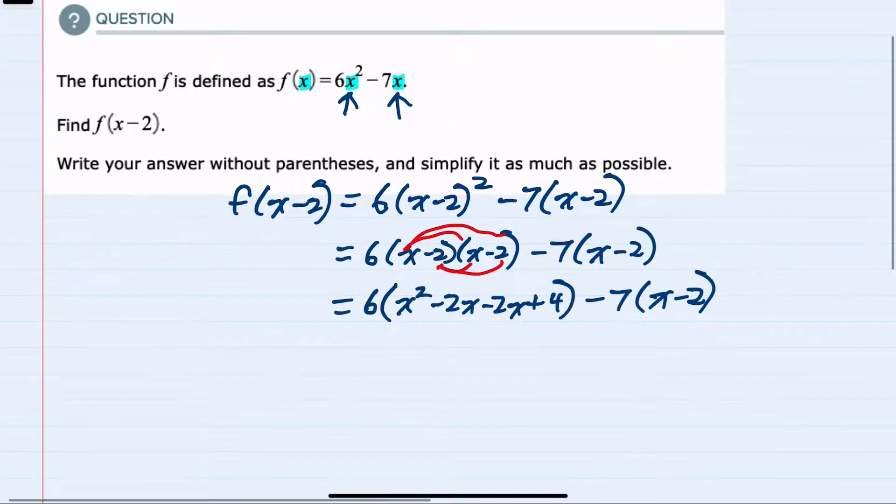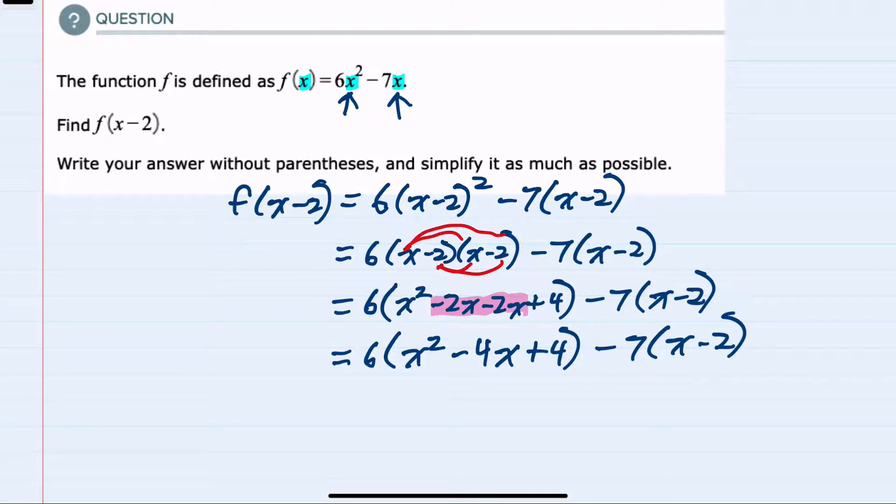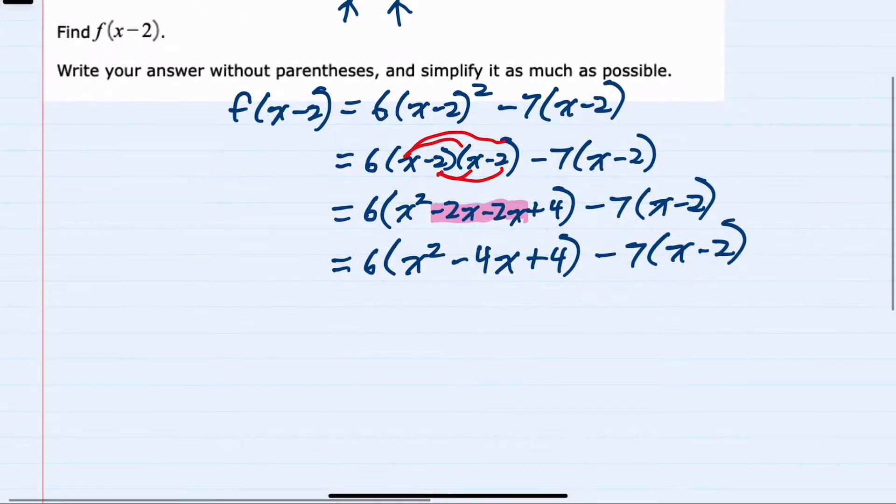Before multiplying we can see that we have like terms inside this parentheses. So I'll go ahead and combine those. Minus 2x minus 2x is a minus 4x plus 4. Now that we've simplified we can distribute the 6.